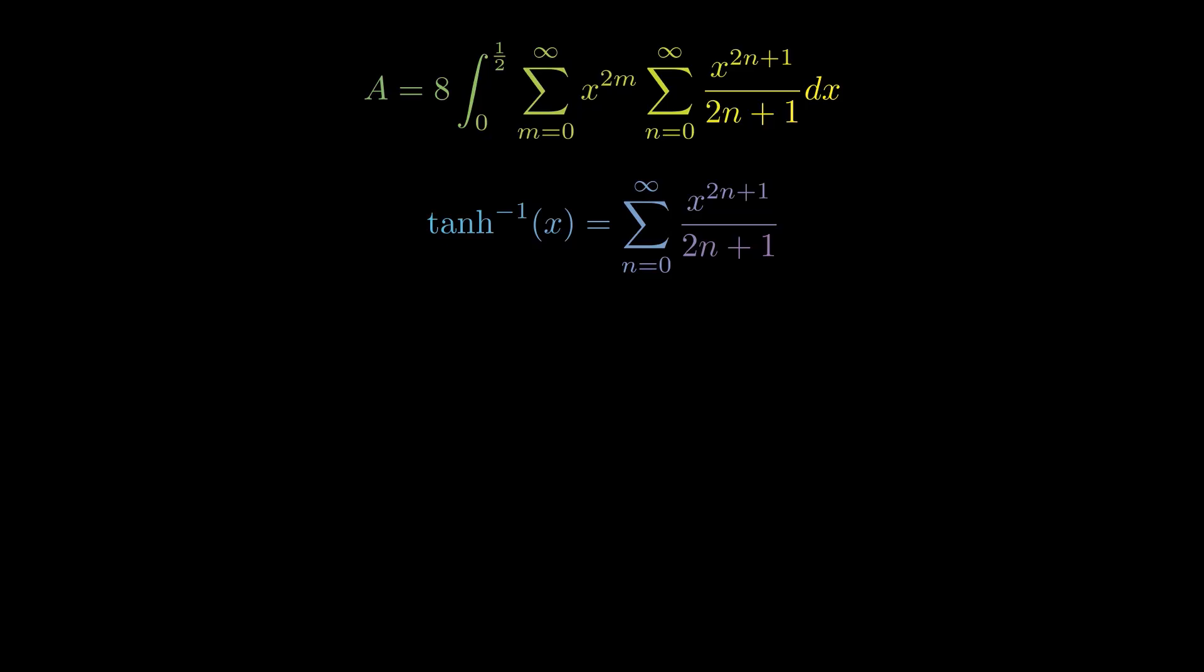Arctan of x equals the summation of x raised to the power of 2n plus 1, divided by 2n plus 1. By substituting this into our integral, our expression simplifies significantly.